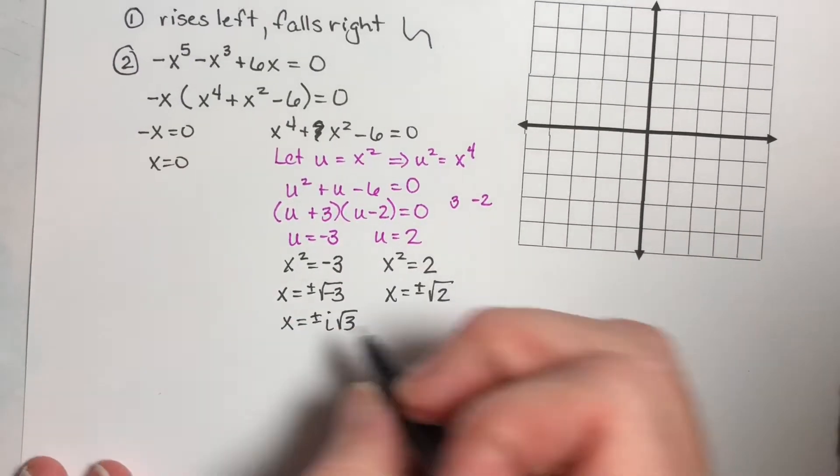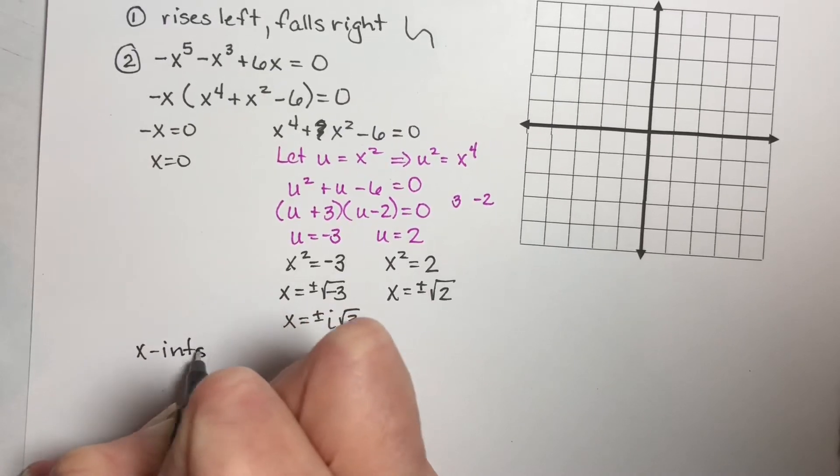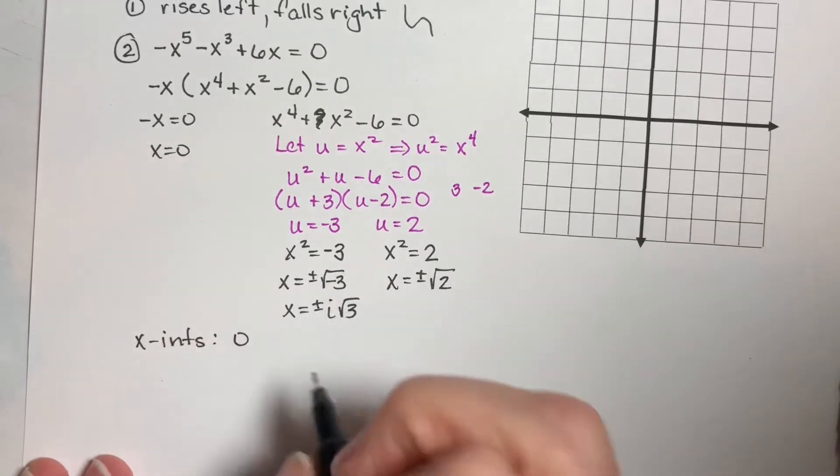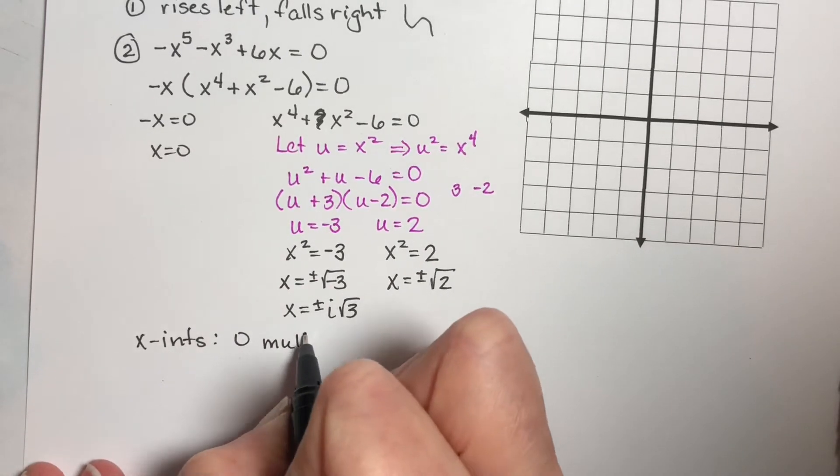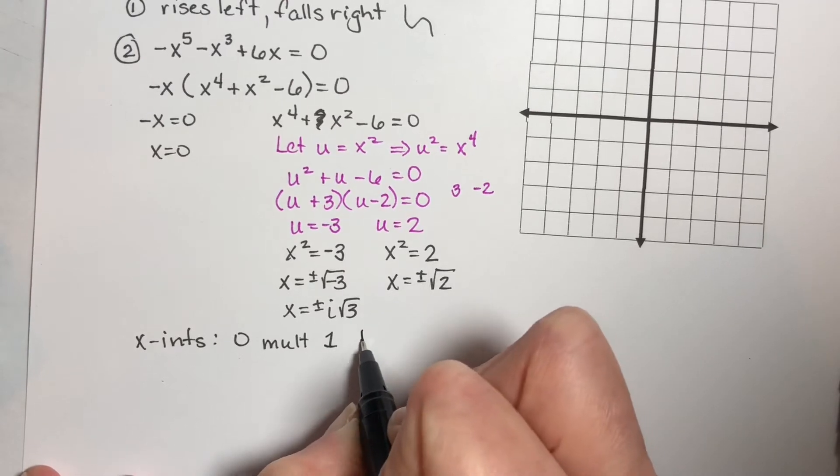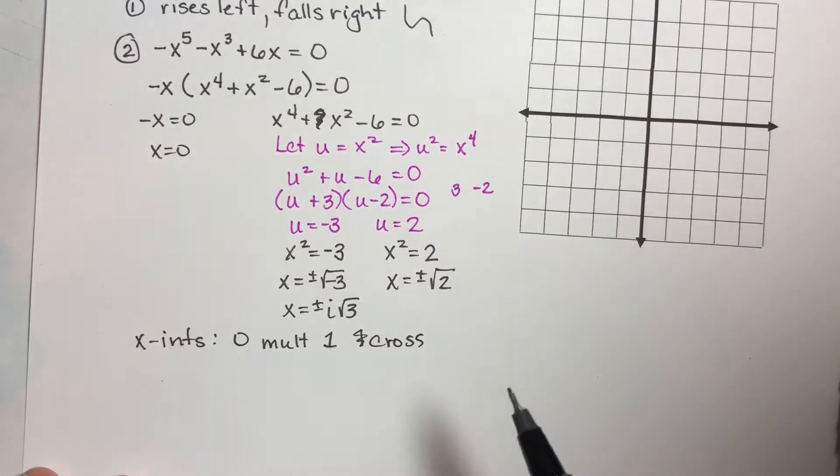So our x-intercepts are, I get zero, and I got zero one time. So this is multiplicity of one, which means we cross here, because one is an odd number.